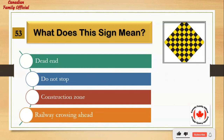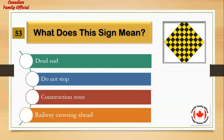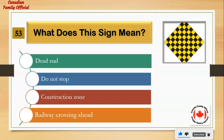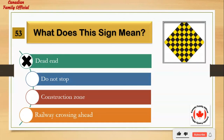What does this sign mean? Number 1: dead end. Number 2: do not stop. Number 3: construction zone. Number 4: railway crossing ahead. And the answer is: dead end.